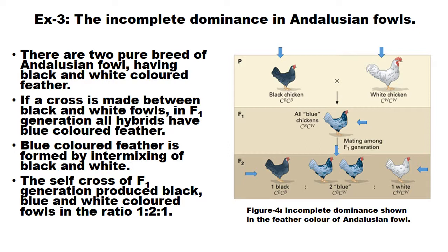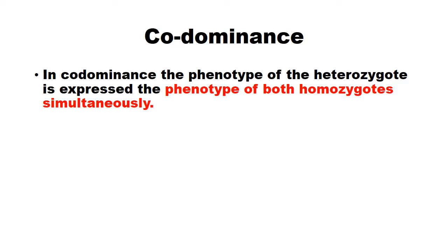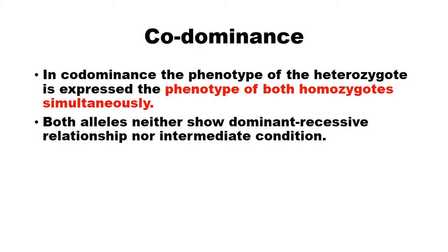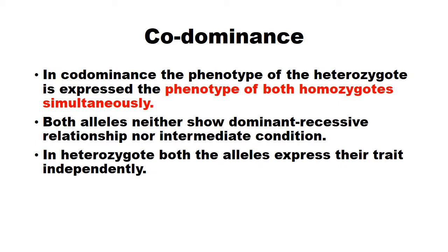This is due to incomplete dominance. Another type of interaction between alleles is co-dominance. In co-dominance, the phenotype of the heterozygote expresses the phenotype of both homozygotes simultaneously. Both alleles show neither a dominant-recessive relationship nor an intermediate condition. In the heterozygote, both alleles express their traits independently.